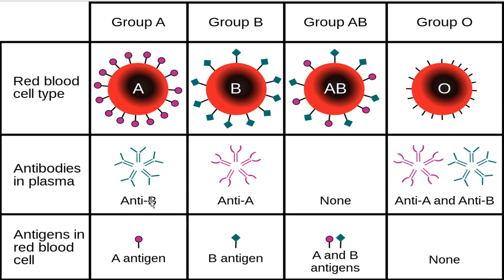Blood group compatibility involves agglutinins — antibodies present in plasma. B-group plasma contains alpha-agglutinin. The antibody by agglutinin determines the antigen compatibility. If the blood group antigen is mismatched, agglutination occurs — alpha or beta agglutinins react with the corresponding antigens.